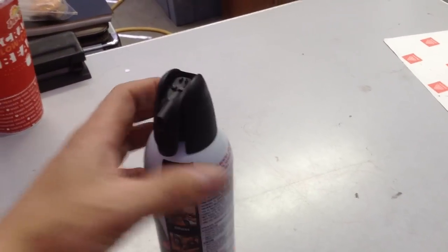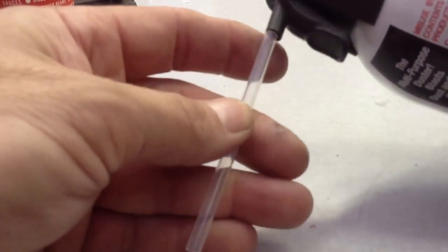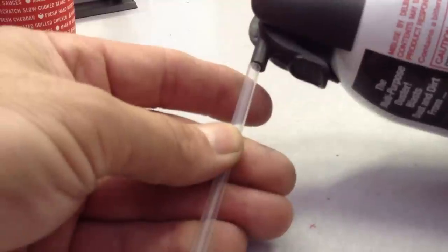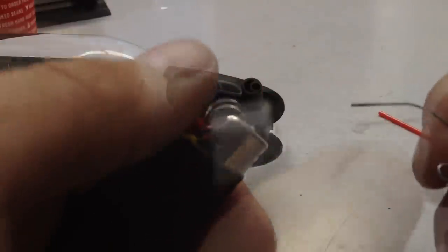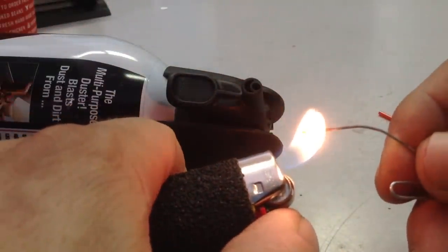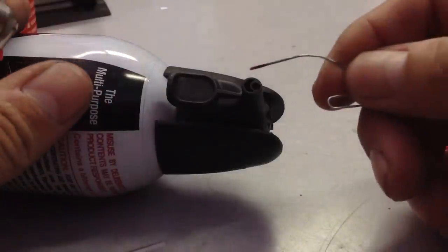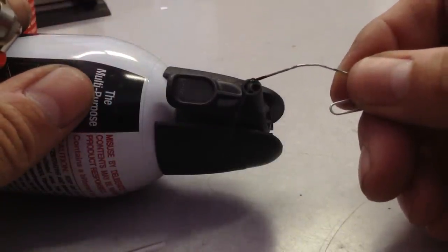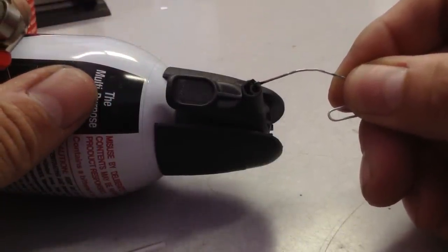Now, to mount our new straw, we're going to modify the nozzle a little bit. By heating the end of this paper clip, we're essentially making a hot knife. We'll melt through the plastic end of the nozzle to make room for our straw.